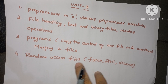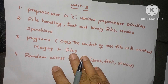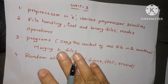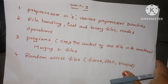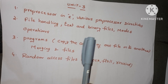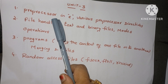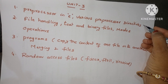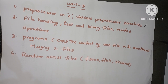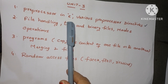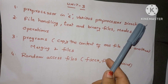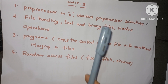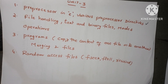Next is Unit 3. Unit 3 is a very small unit, so cover it first and you can easily pass PPS. There are only four questions. The first is preprocessor — a very important question: what is a preprocessor in C language, and explain the various preprocessor directives. I have done one exclusive video on this topic — read from that one.